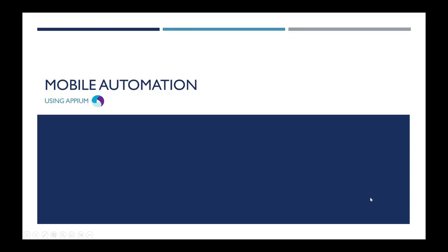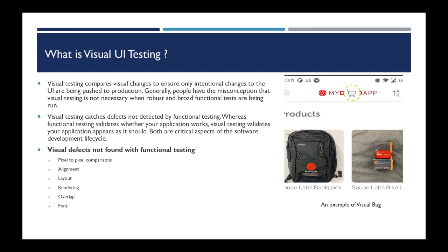Hello everyone, welcome to this video series on mobile automation using Appium. In today's video we will see what is visual UI testing and how we can achieve it using Appium. As the name implies, visual UI testing is the testing of the visual aspects of the application under test — it could be a desktop application or a mobile application. The look and feel of the application should be as expected so that we give the best experience to the end user.